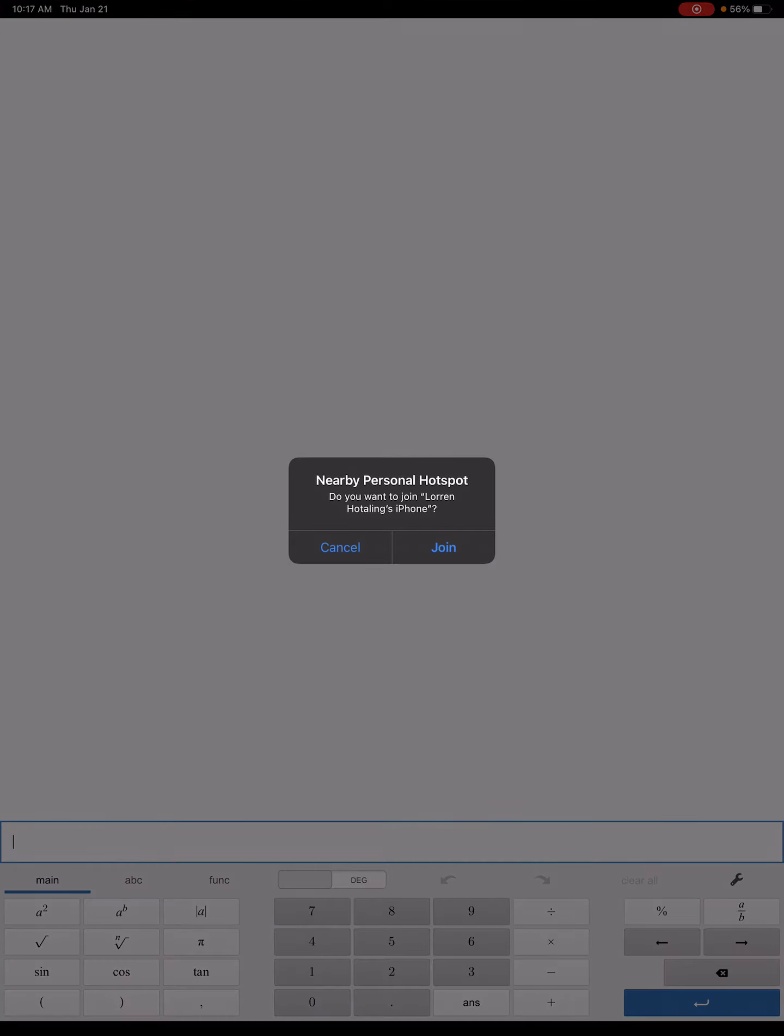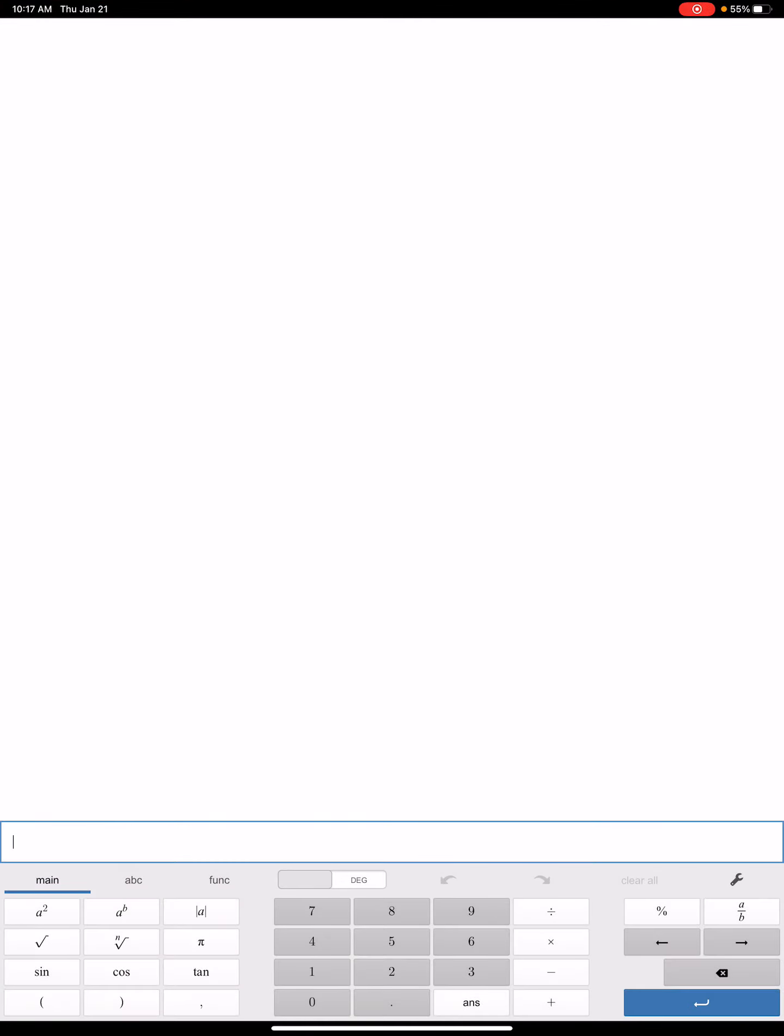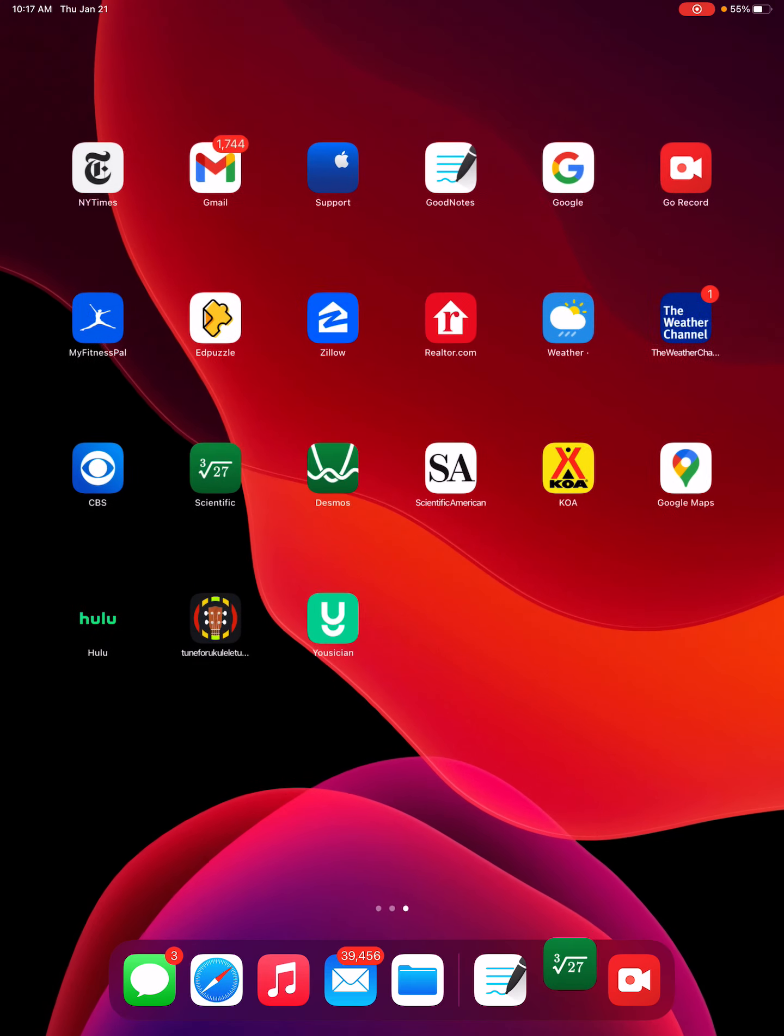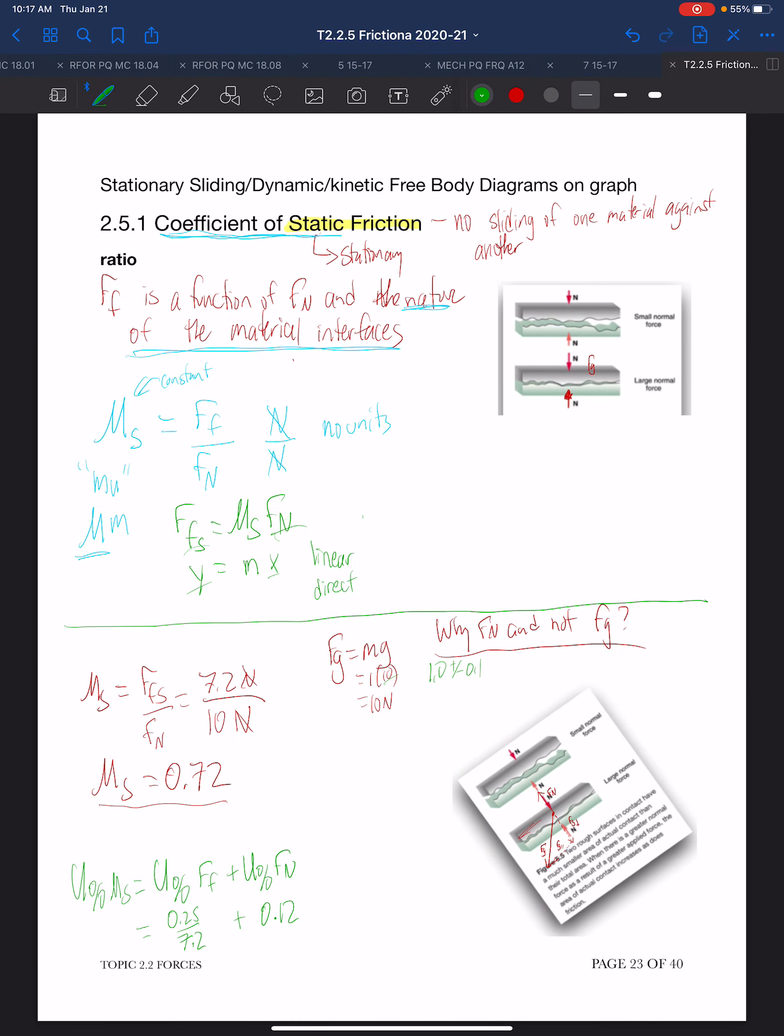So using our calculator to find out that percent uncertainty, we have 0.25 divided by 7.2 plus 0.12. So that gives us about 15.47%.